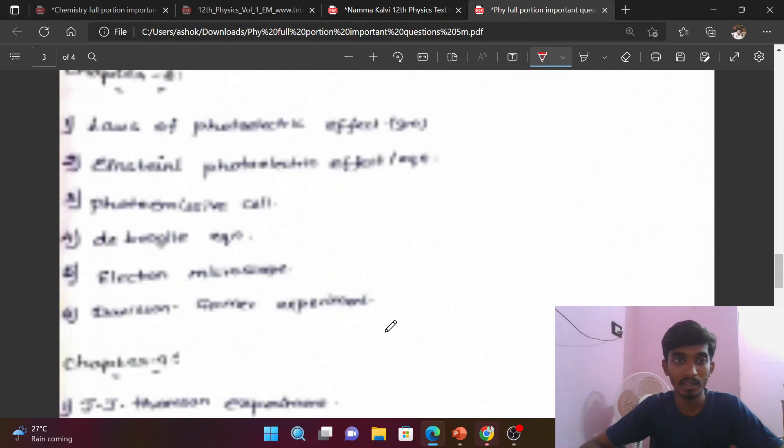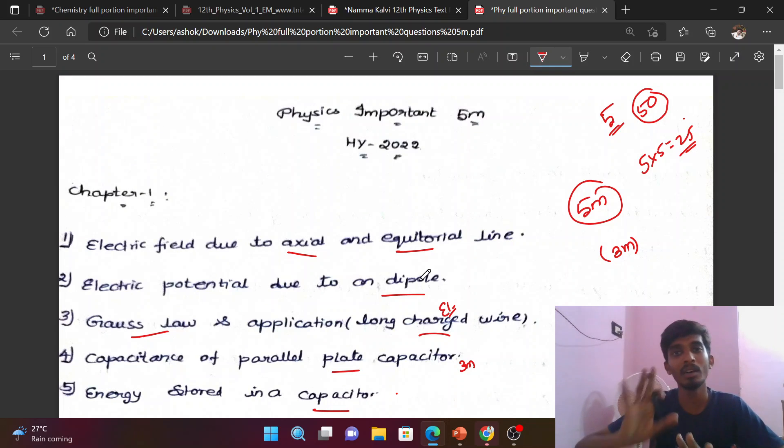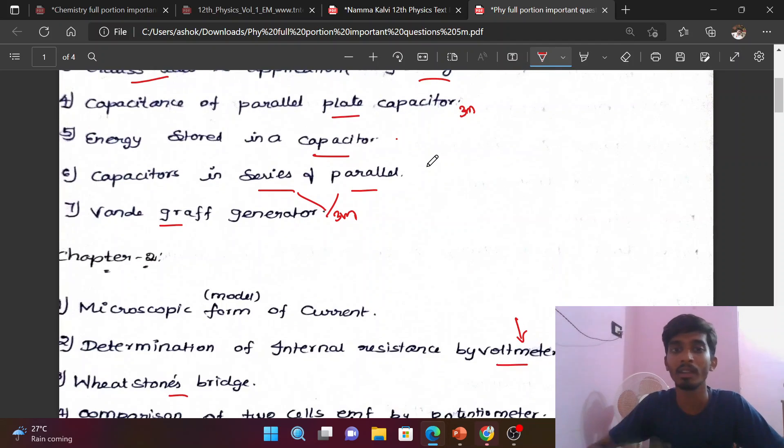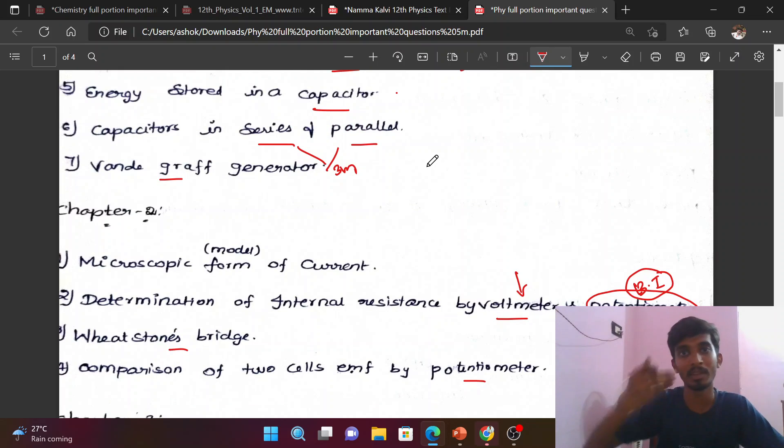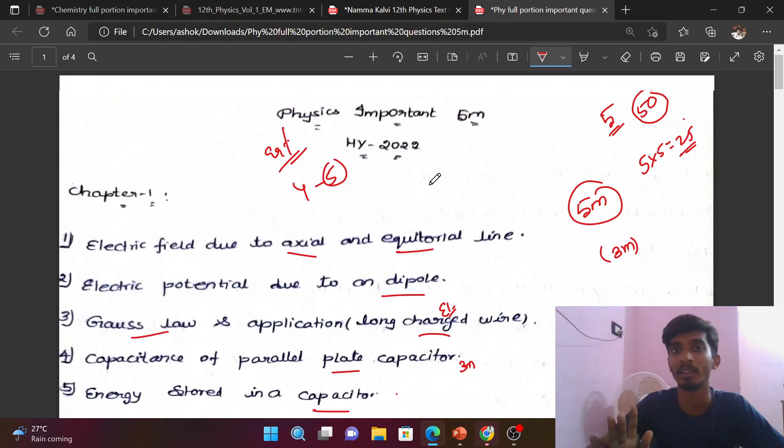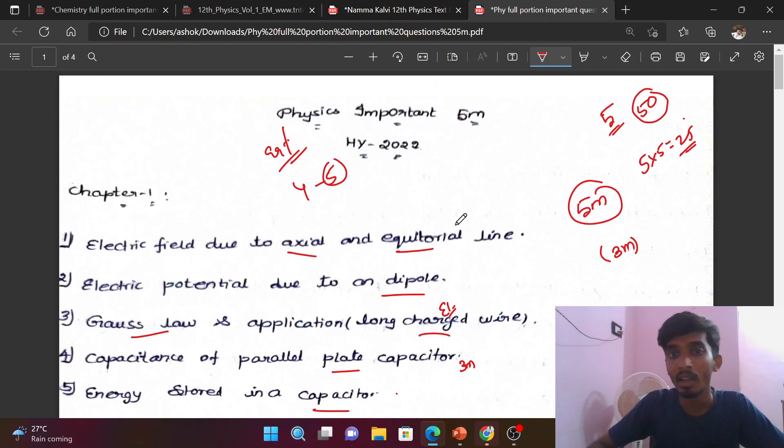These are the most important 5-mark questions. If you study these, you can expect 5 out of 5 questions, 99% guaranteed. In rare cases, minimum 4, maximum 5 questions will come from these topics. If you study these chapters thoroughly, you'll be well-prepared. I hope this helps with your self-analysis. Thank you.